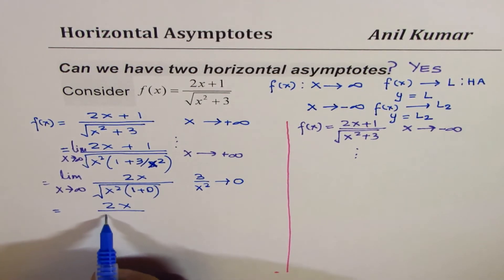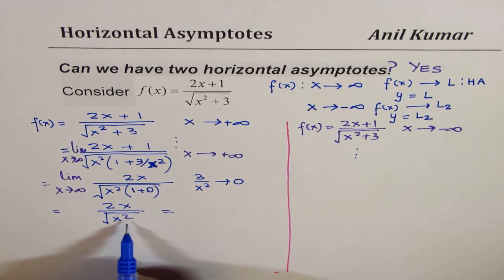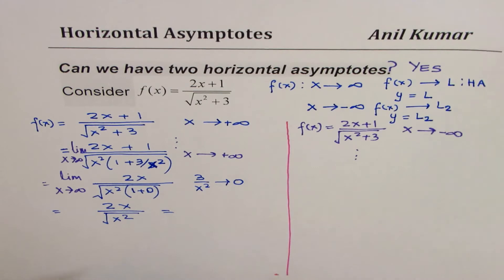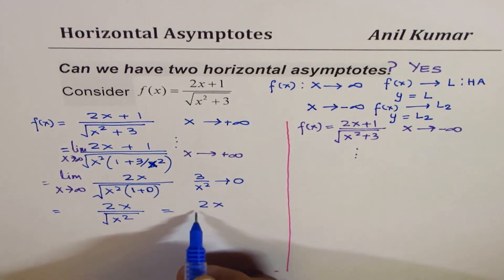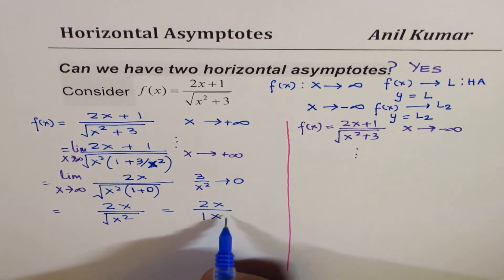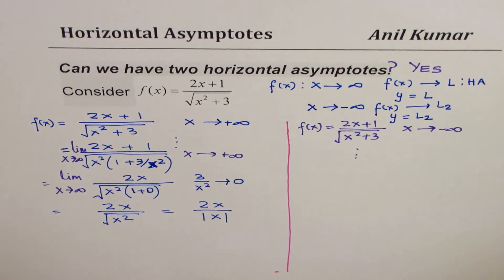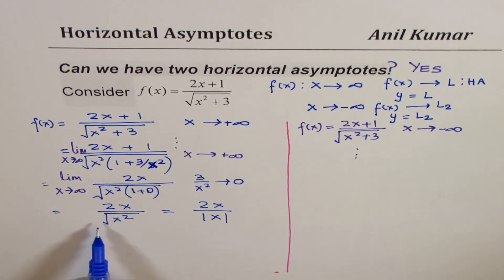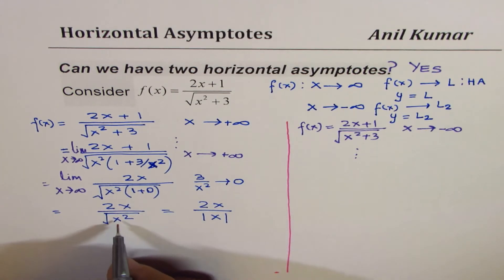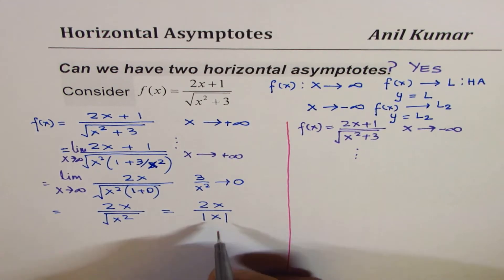In a way, what we get here is an expression which is 2x over square root of x². As you know, square root of x² is absolute value of x, so we get 2x over absolute value of x. Do you get the idea why is it absolute value of x, not x? Square root always gives you a positive value, so we write absolute value of x.